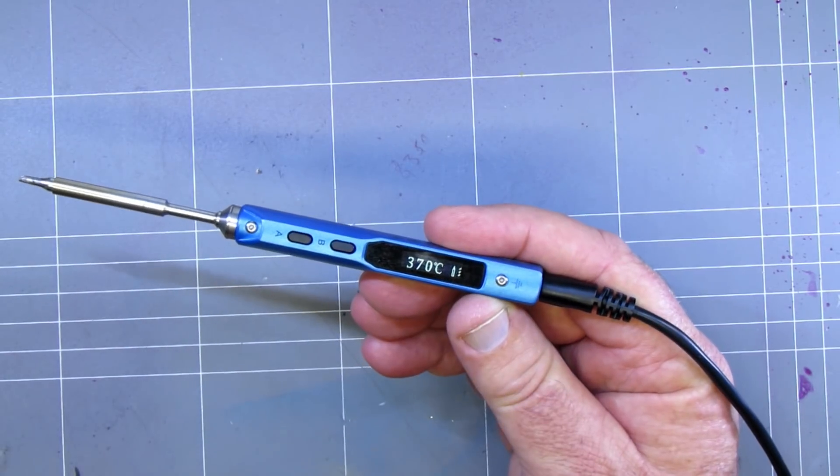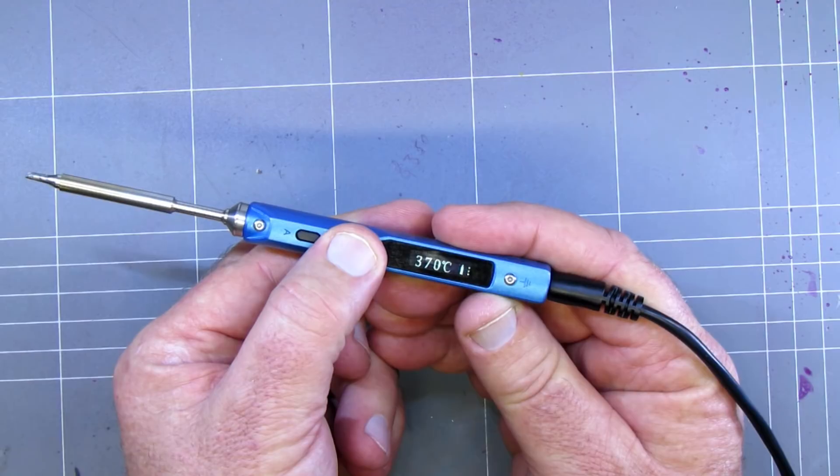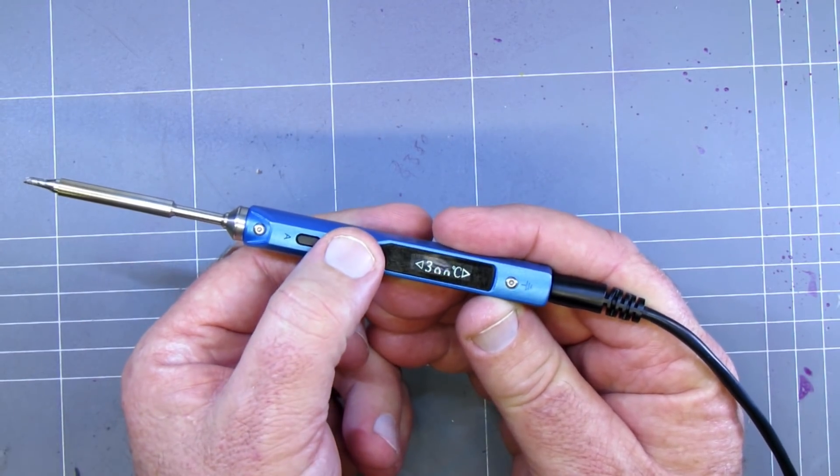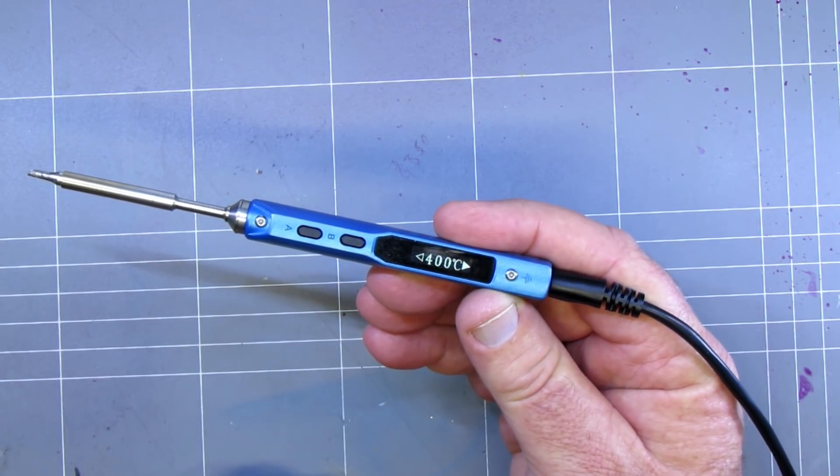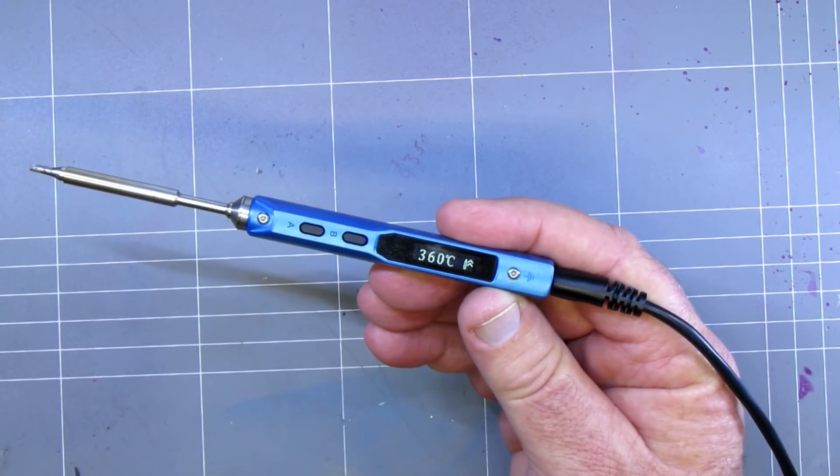Let go of the button and after a couple of seconds it'll go to that temperature. Same again, just hold the button down. You want to go up, oh that's down, we'll go up back to 400. Leave it for a second and now it's heating back up to 400 degrees.